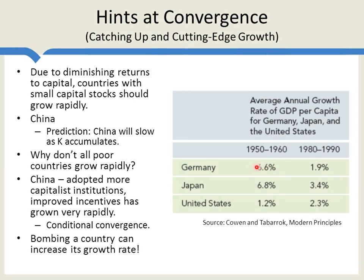This also suggests another idea we'll discuss in future lectures. If these high rates — 6.6% for Germany and Japan, China's 10% rate — are all about catching up, about really high productivity capital catching up to a natural level of GDP per capita, what is determining growth on the cutting edge? We'll talk more about that when we come to discuss ideas in a future lecture.